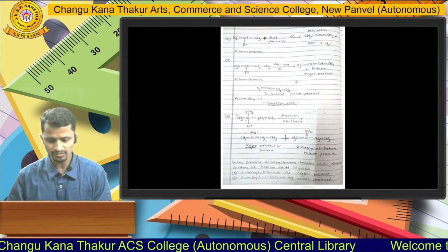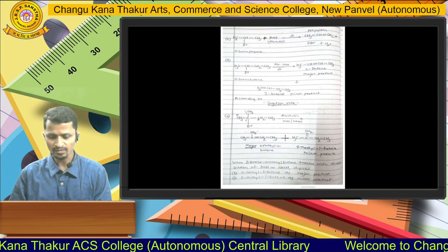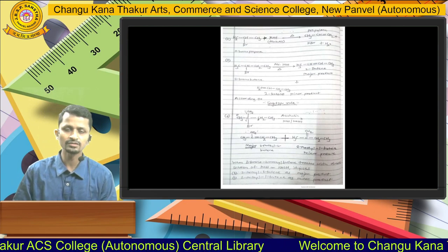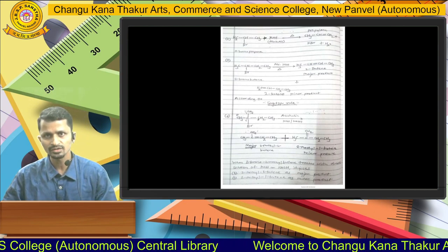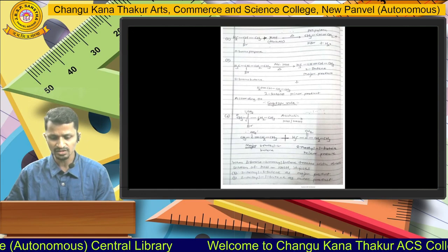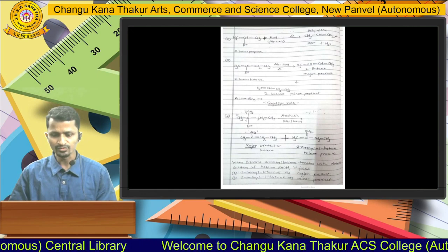The next example: 2-methyl-2-bromopropane, when treated with alcoholic KOH or NaOH, gives 2-methyl-2-butene as the major product.